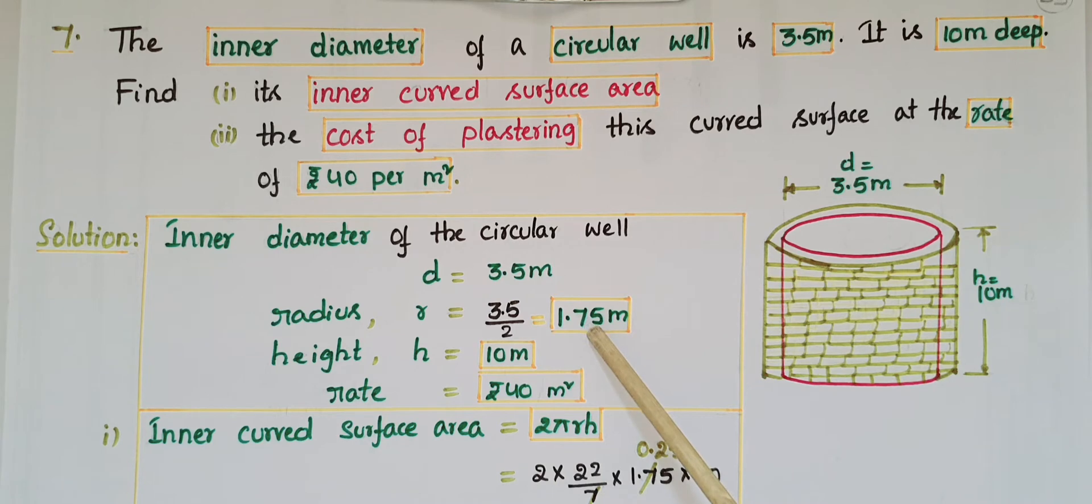Height of the well h = 10 meters. Rate is 40 rupees per meter square. This rate is the cost of plastering the inner curved surface. First you have to find the inner curved surface area.